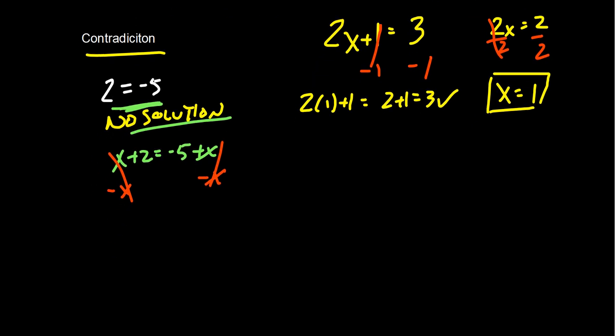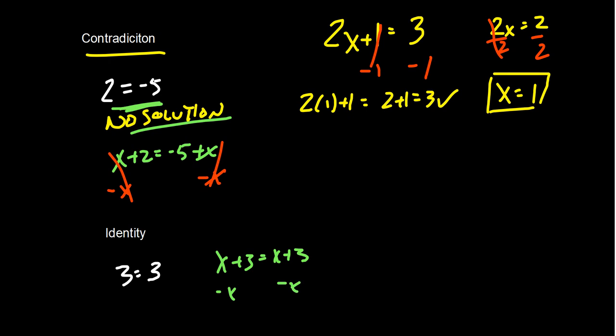On the other hand, sometimes we end up with things called identities. An identity is an equation that's always true, irrelevant of the variable assignment. As an example, what if we ended up with something like 3 equals 3? If you go about solving your equation and end up with an identity, it tells you there's no restriction on the variable. For example, if we had x plus 3 equals x plus 3 and subtracted x from both sides using the additive property, the x's cancel and we end up with 3 equals 3. In this situation all real numbers solve the equation — there's nothing that prevents it.